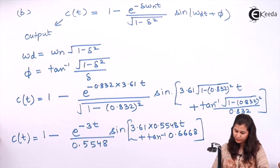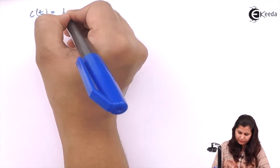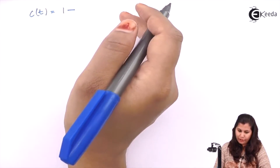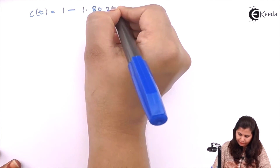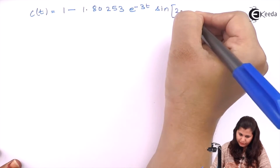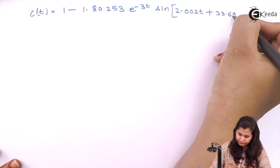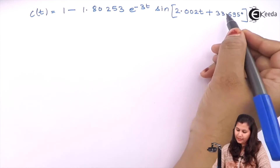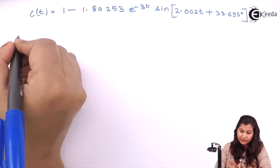Simplifying further, c(t) = 1 − (1/0.5548)·e^(−3t) · sin(2.002t + φ). The exponent becomes approximately −3t, and the damped frequency ωd ≈ 2.002 rad/s. The phase angle φ = tan⁻¹(0.6668) ≈ 33.695 degrees.